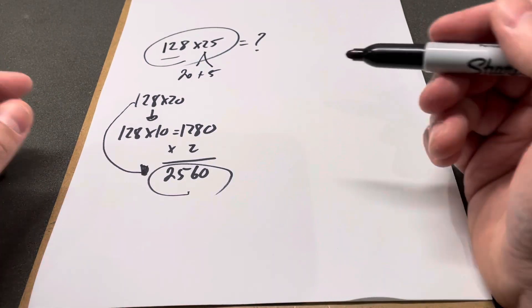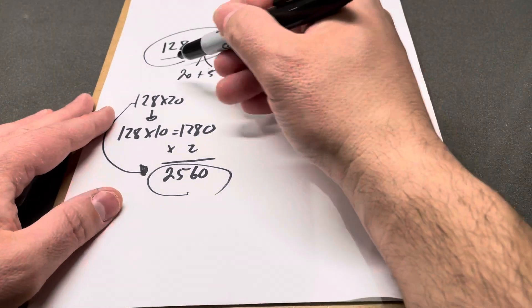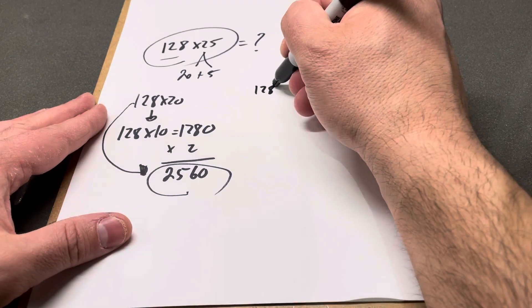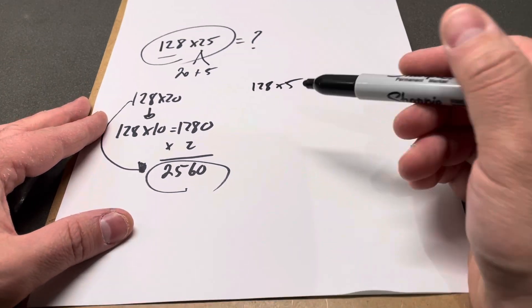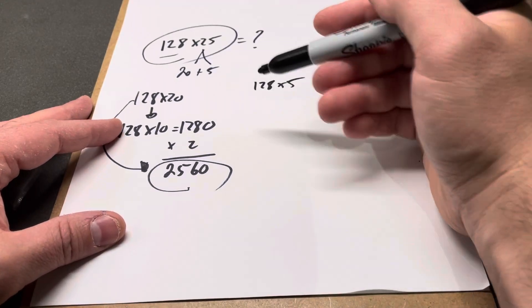Now the next one is easier. 128 times 5. What I would do is the same thing - 128 times 10, which I already remember from before, is 1280.